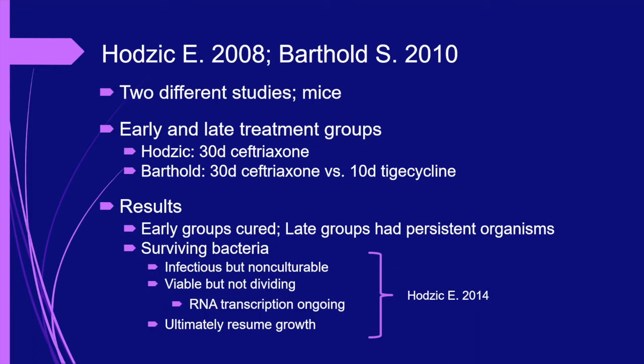Both Hodzik and Barthold conducted treatment trials in mice, examining therapeutic efficacy in animals infected acutely and those with late disease. In addition to a ceftriaxone arm, Barthold also studied the effectiveness of tigecycline. These studies demonstrated that ceftriaxone and tigecycline cured early disease, but that bacterial persistence was the norm in late disease. Curiously, the surviving bacteria were viable but not dividing. Hodzik subsequently reported in a 2014 paper that B. burgdorferi growth resumed after 12 months.